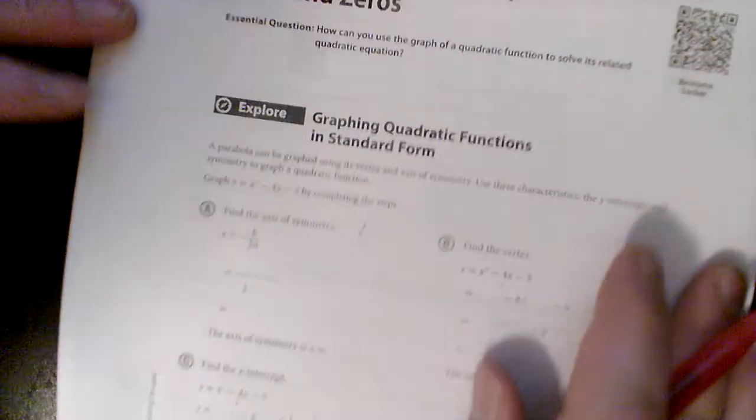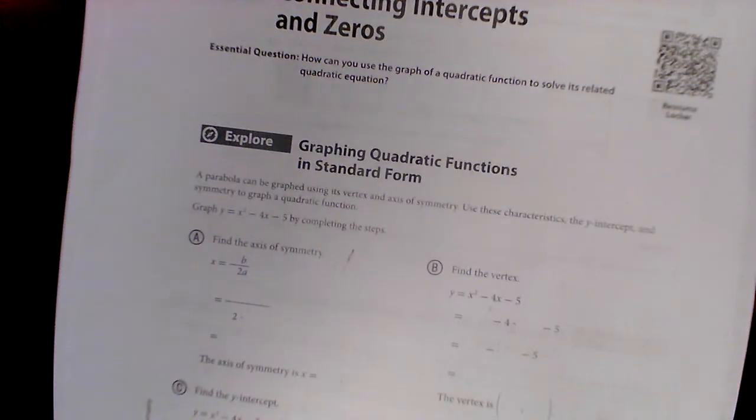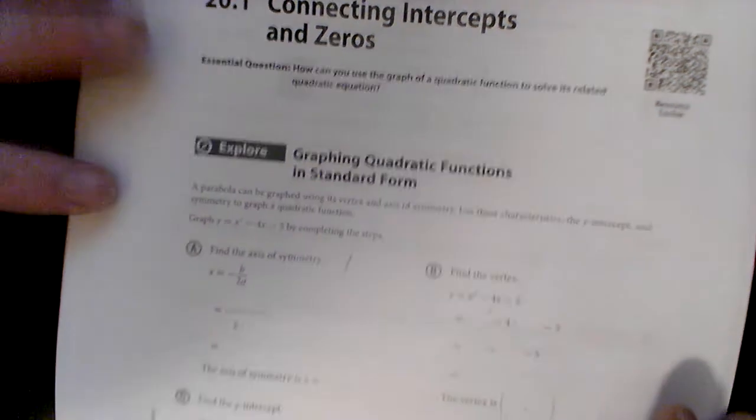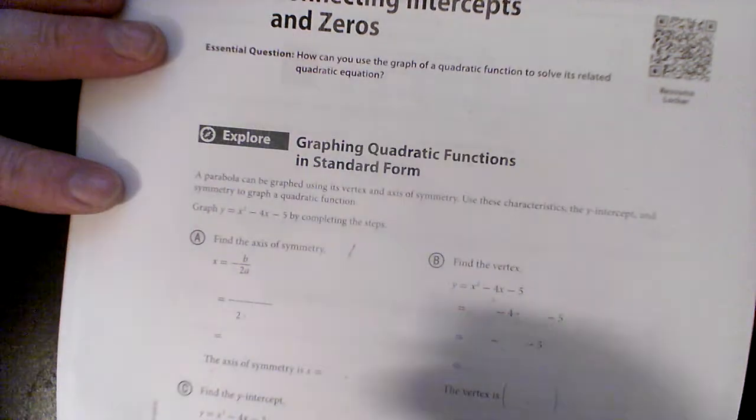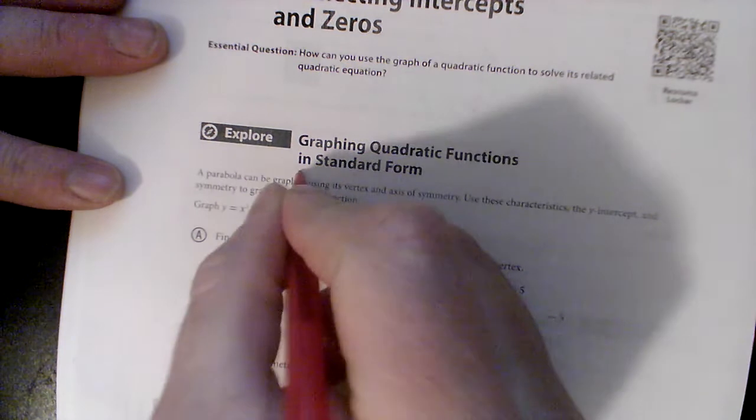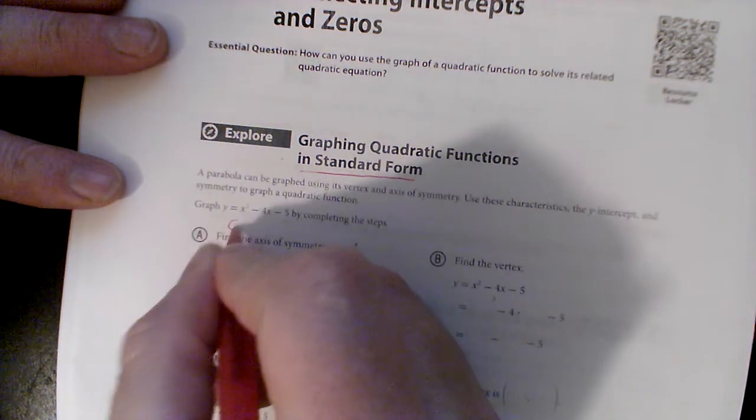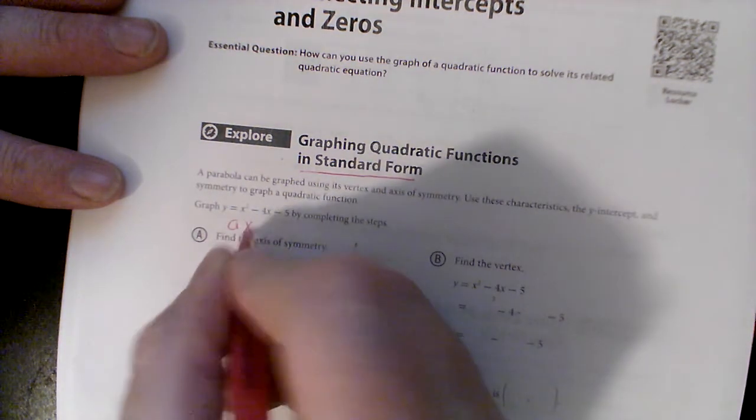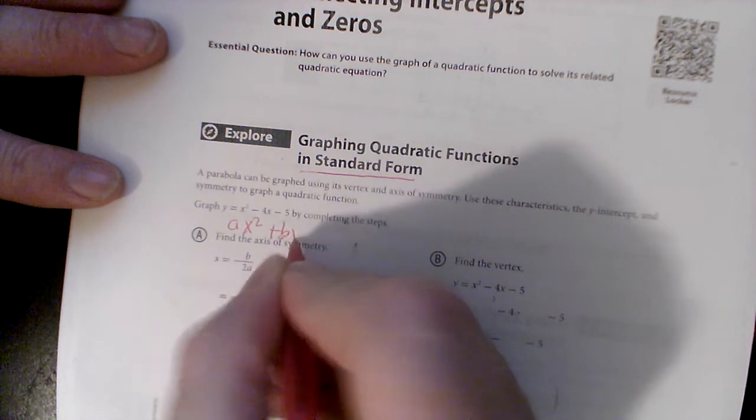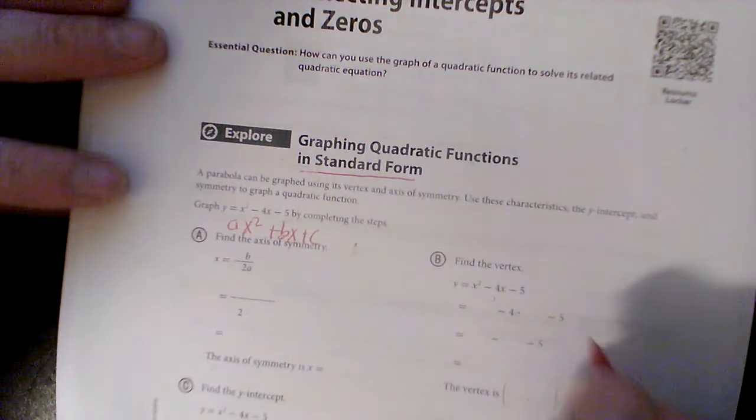All right, we have a little bit harder process for graphing today. Instead of graphing in vertex form, which is really easy to graph from with the a, h, and k, we're gonna graph in standard form. We've done a little bit of it before. I'm gonna point out that it is ax squared plus bx plus c.